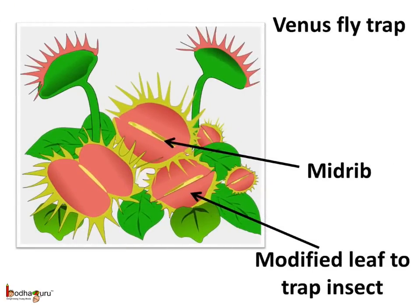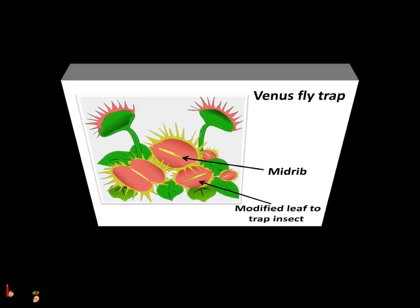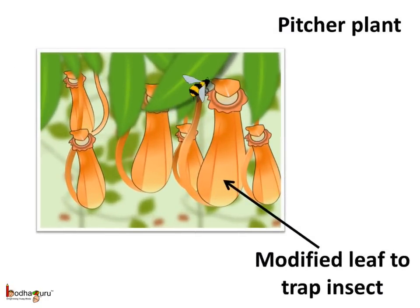There are certain plants which eat insects and they are called insectivorous plants, for example the venus fly trap, pitcher plant, etc. The leaves are modified to set a trap for insects. In the case of the venus fly trap, the lamina of the leaf is divided into two parts which join at the midrib. The midrib acts like a hinge, so when the insect sits on the leaf, the two parts of the lamina fold at the midrib and come together to trap the insect. The pitcher plant's leaves are modified to form tube-like structures with hair, and this is used to trap insects.